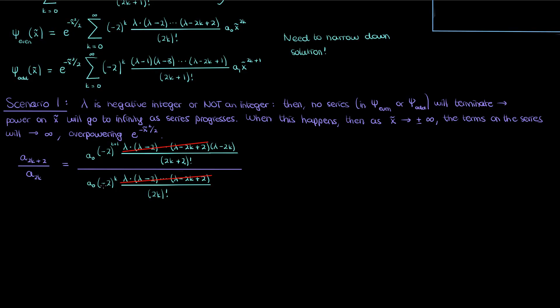We can cancel all the λ factors except λ - 2k. We can cancel the -2 to the k and we can cancel the a naughts. After doing that and rearranging the expression to make it a simple numerator over denominator, this is what we get. Now if we use the definition of the factorial, the 2k factorial and 2k + 2 factorial cancel each other out but we're only left with 2k + 2 and 2k + 1 in the denominator. The 2s also cancel out giving us this final value for the ratio of coefficients a_2k+2 to a_2k.